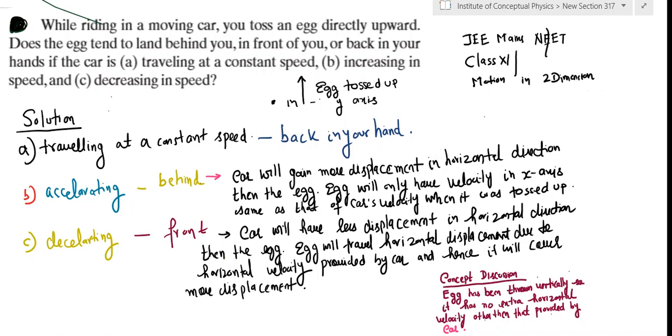We have to identify what happens to the egg when it lands. Does it land in front of you, does it land behind you, or does it land back in your hands? So there are three parts to this numerical which we will discuss one by one in our next video.